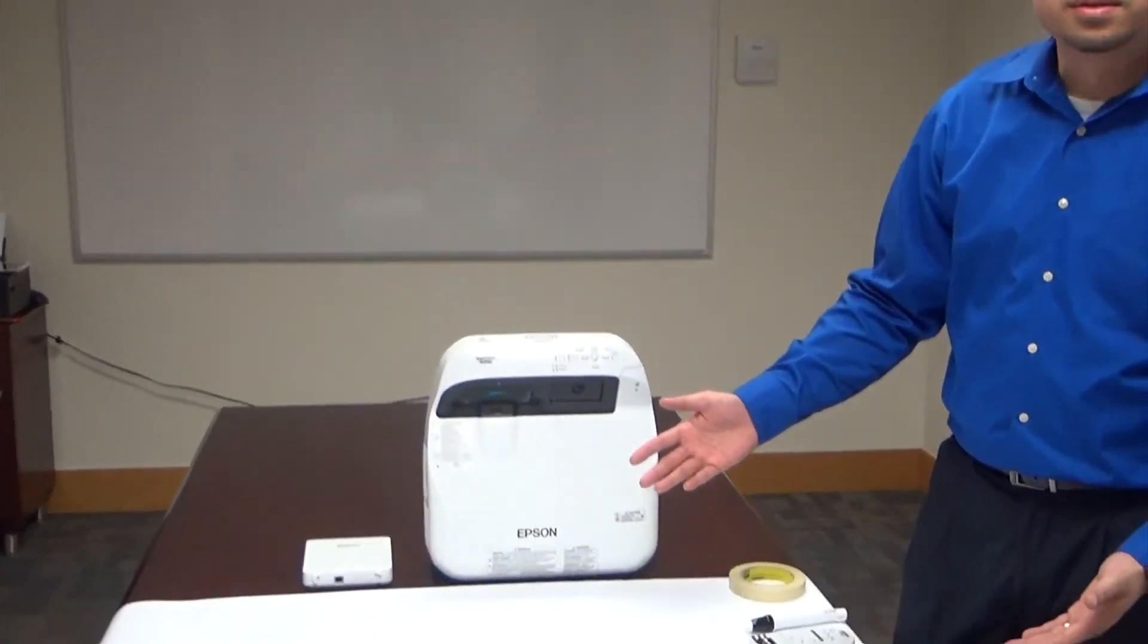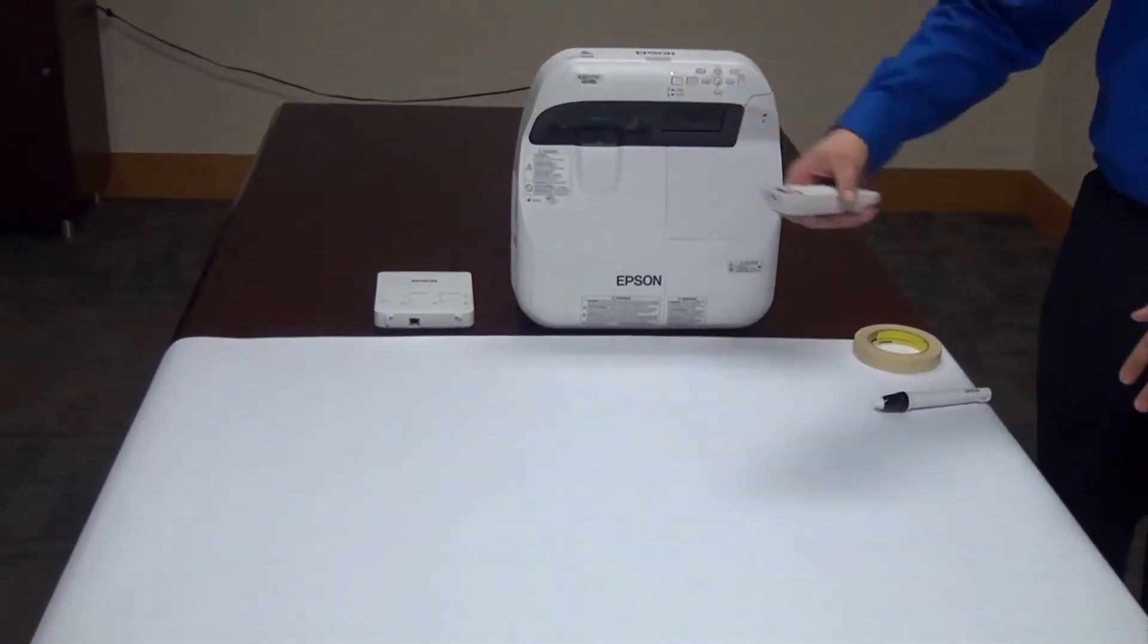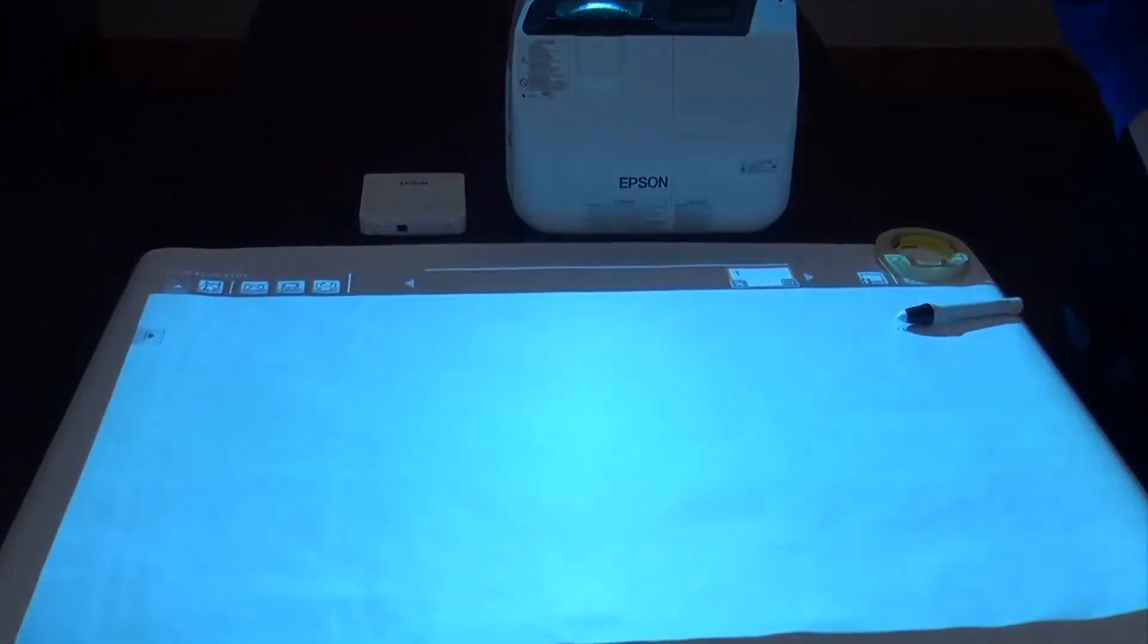Here I have the second easy demo option. Stand the projector up on end. Project directly onto a table. If you don't have a white table, bring some white paper. Roll it out. Tape it down. Turn on your projector. You're good to go.